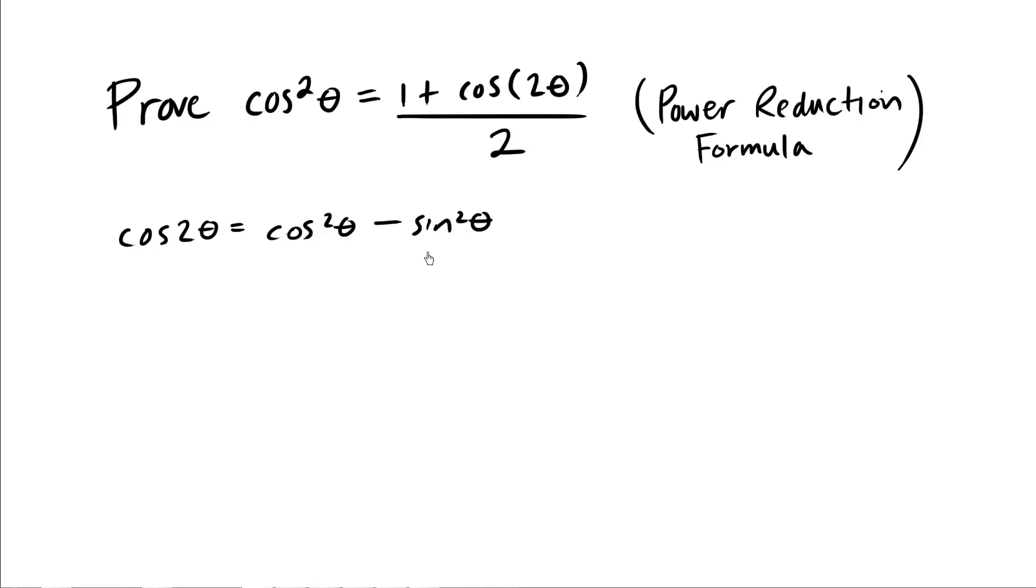Now, we want to get rid of the sine squared theta, so we need to solve what sine squared theta is. We're also given that sine squared theta plus cosine squared theta equals 1. So we can rearrange using basic algebra to solve for sine squared theta. Sine squared theta equals 1 minus cosine squared theta.